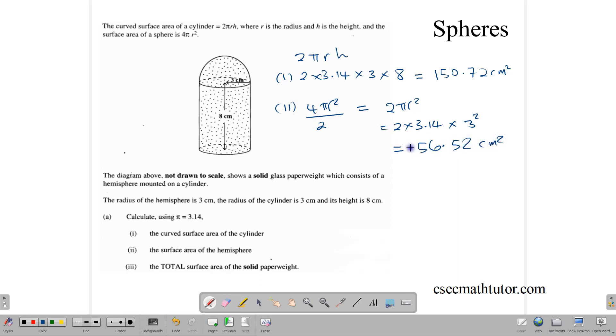So this is part two, and the third part is to calculate the total surface area of the shape, of the solid paperweight, this is it.